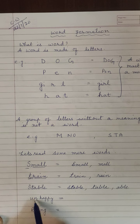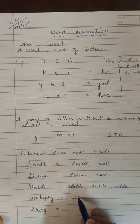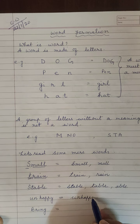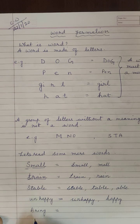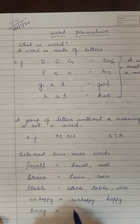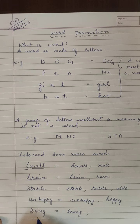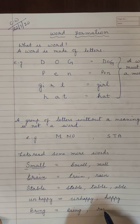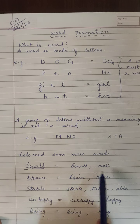Next, 'unhappy'. From this word we can get 'unhappy' and also 'happy'. Next, 'bring' — B, R, I, N, G. Bring means you have to bring something. From these letters we can also make the word 'ring' — R, I, N, G. So from many letters we can frame a meaningful word.